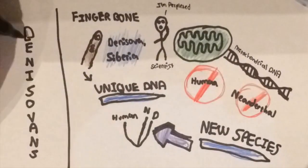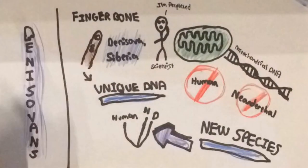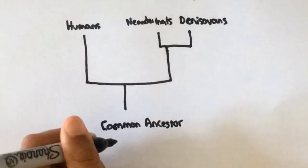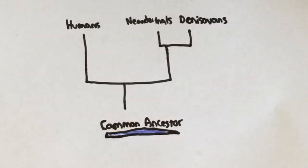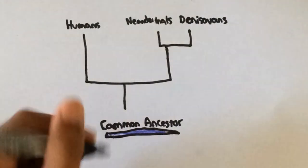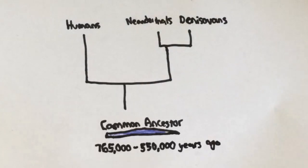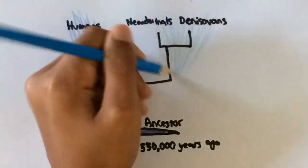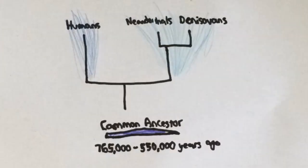These were the Denisovans, who were more closely related to the Neanderthals. The common ancestor between the Denisovans, humans, and Neanderthals was later discovered to live between 765,000 and 550,000 years ago and split into two lineages, one leading to humans, and the other branching out to Denisovans and Neanderthals.